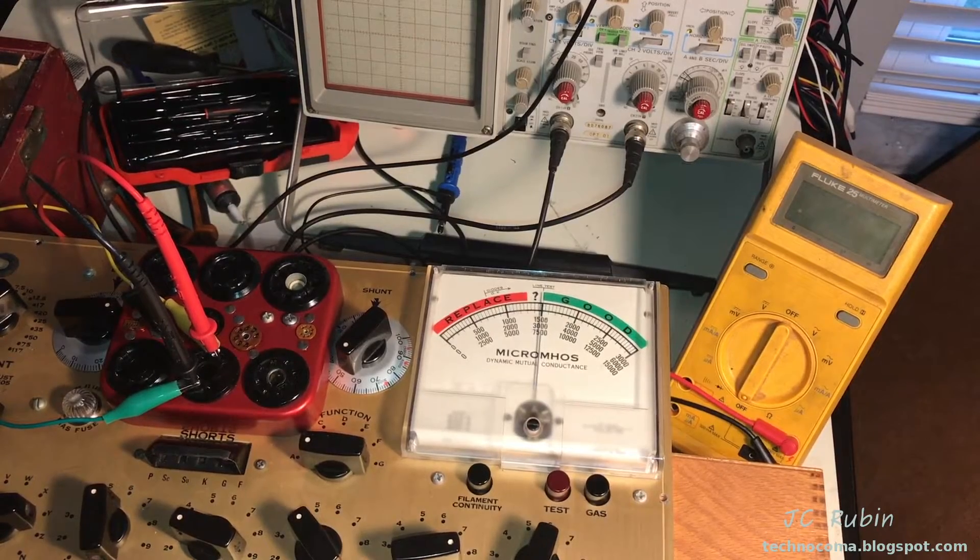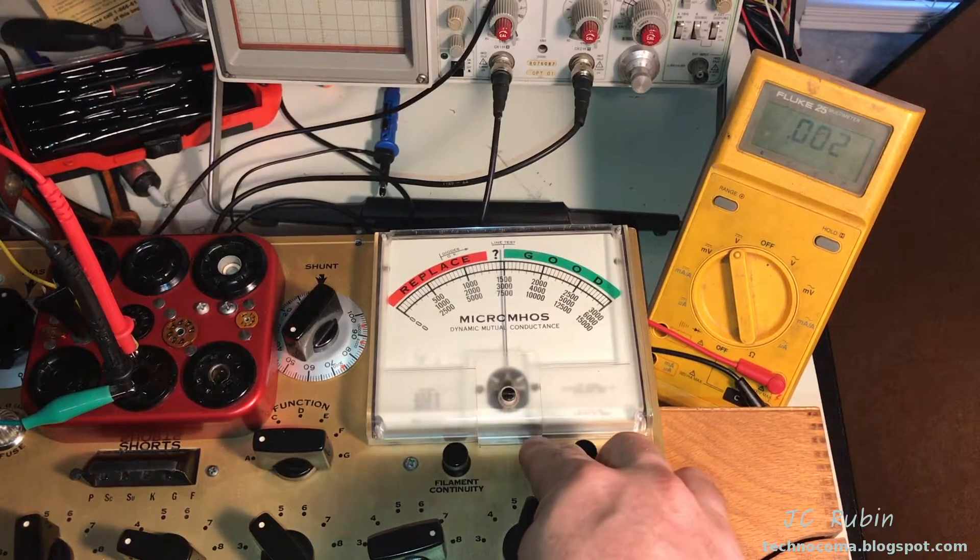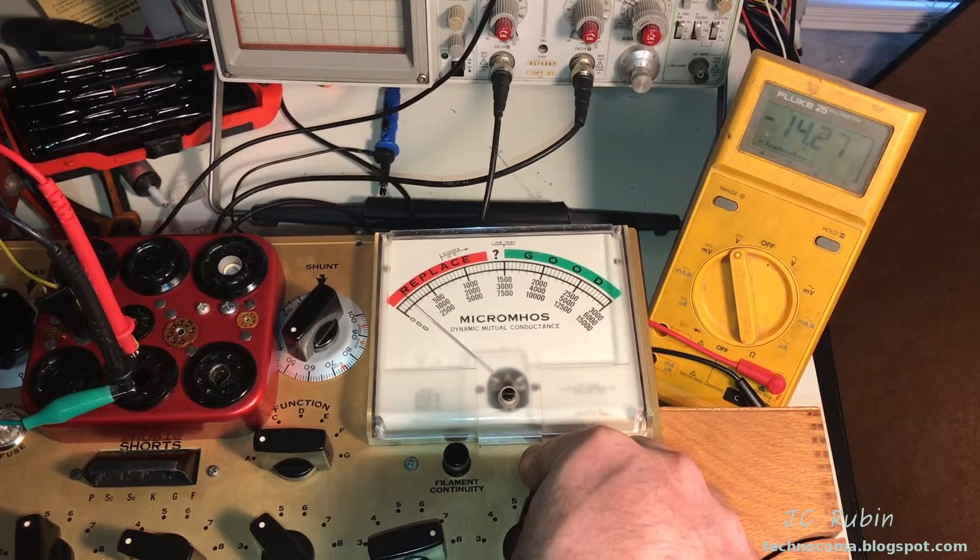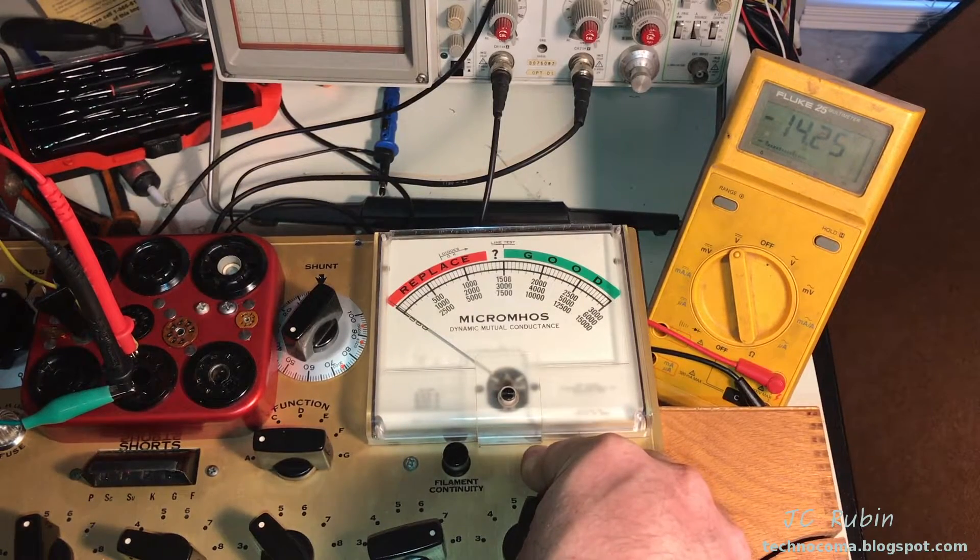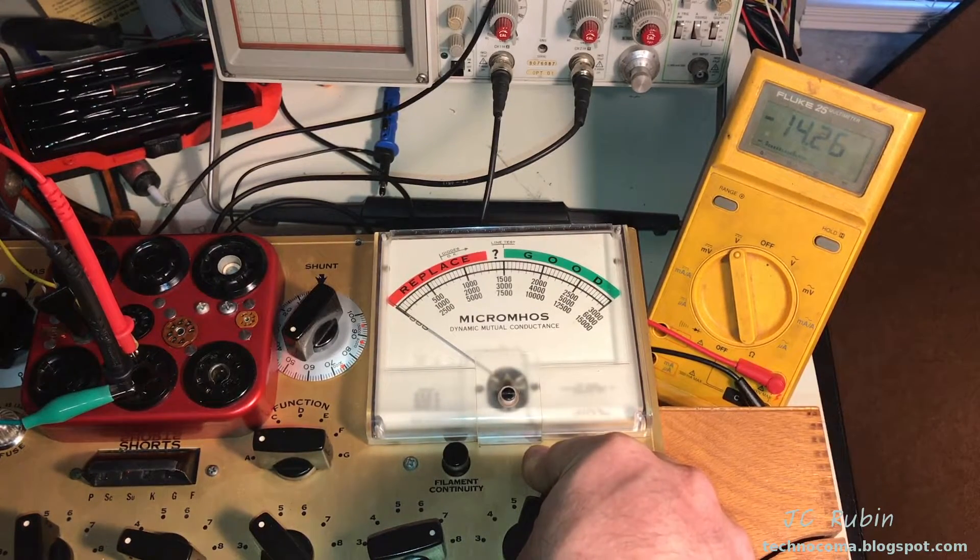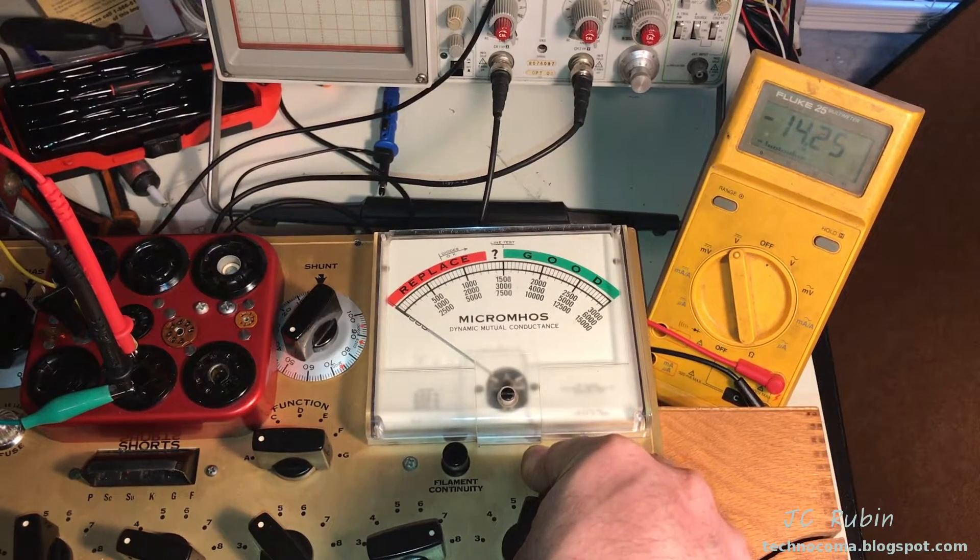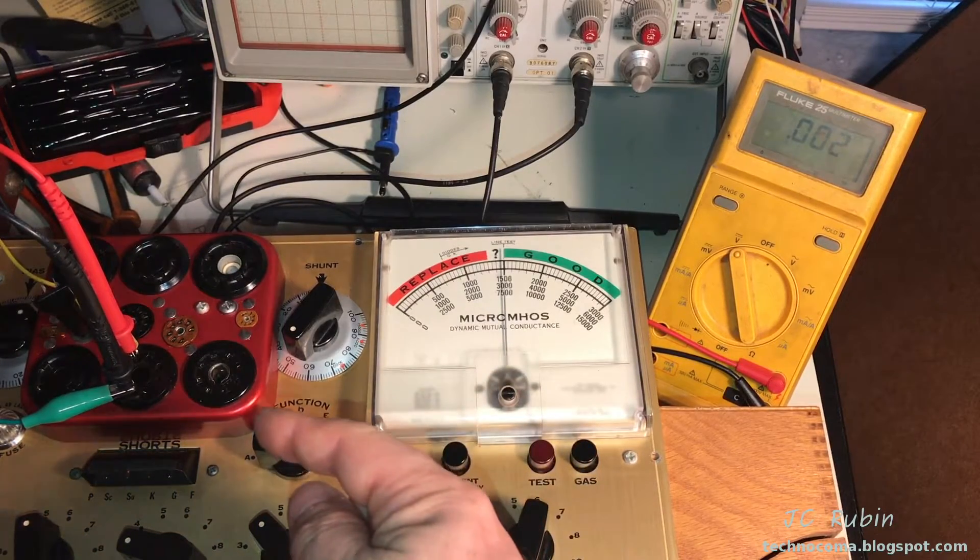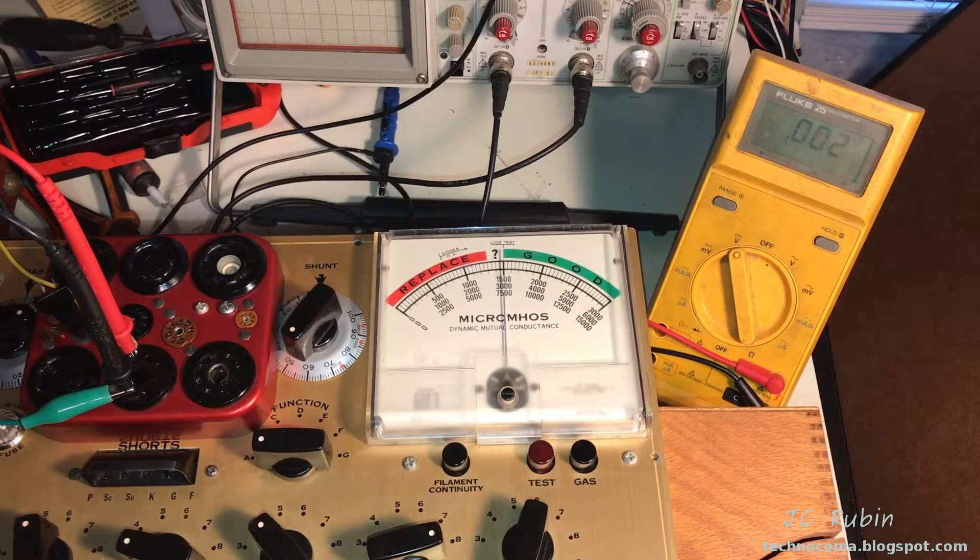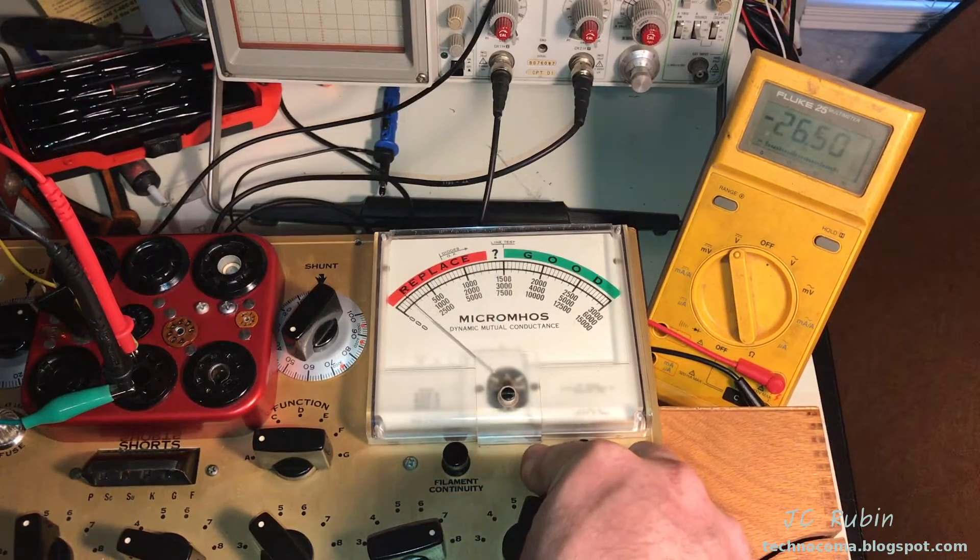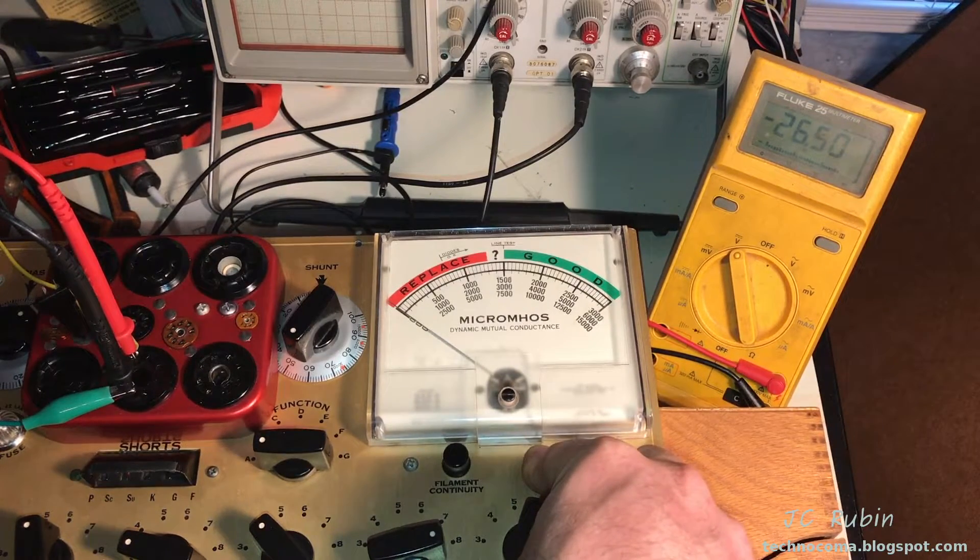The next two tests will use a 50k shunt again. Next value has the bias knob at 50. I'm going to push the button, and we're supposed to get 13.4 plus or minus 1 volt. This is within tolerance, so this value is good at 50. Next one is 75 on the bias knob, uses the same 50k shunt. It's supposed to be 25.8 plus or minus 1 volt. We're seeing 26.5, which is also within tolerance.